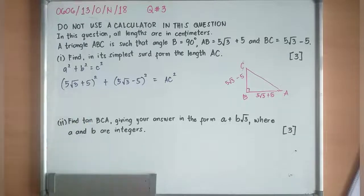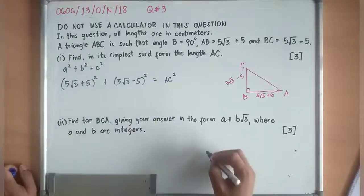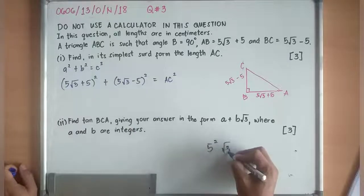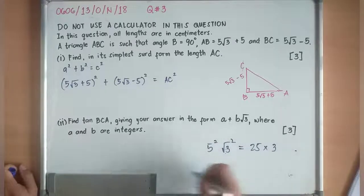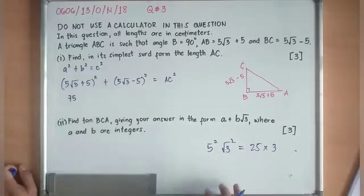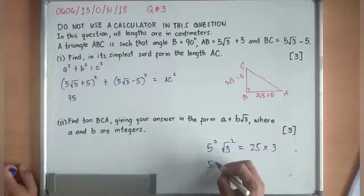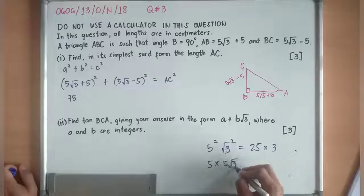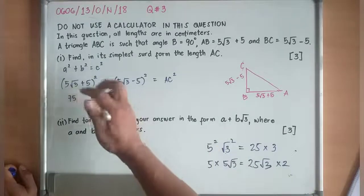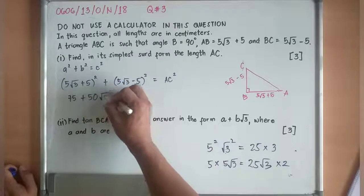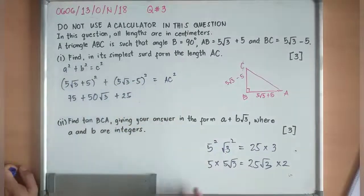Because AC is our hypotenuse and C is always the hypotenuse. I'll expand this. This will become 5² is 25, √3² is 3. So 5² times √3² which is equivalent now to 5² is 25, 25 × 3 and 25 × 3 is 75. Next, 5√3 × 5 is 25√3, so 5 × 5√3 is equal to 25 plus 50√3, then plus 25.